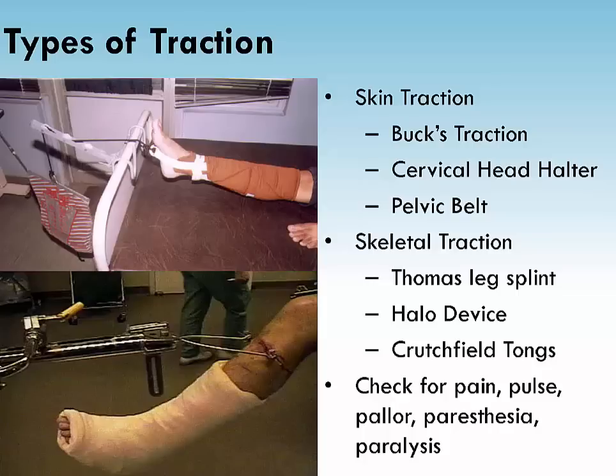Skeletal traction involves weight applied and attached to metal inserted into the bone, such as pins, wires, or tongs. It is important to place the pin correctly to avoid injury to vessels, nerves, joints, and the growth plate. There are more risks associated with skeletal traction. Bone inflammation may occur in response to the introduction of foreign material. Infection can occur at the pin sites and, if caught early, can be treated with antibiotics. If severe, it may require removal of the pin.